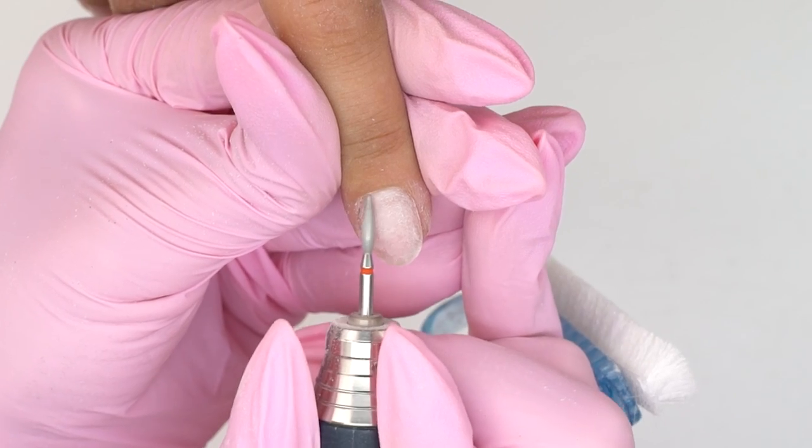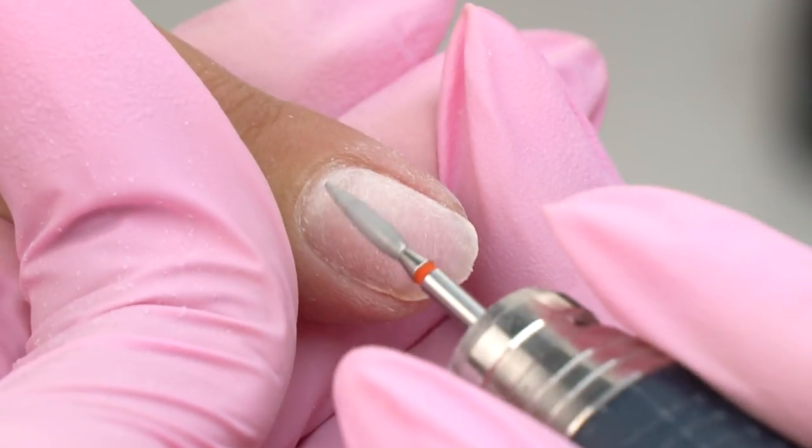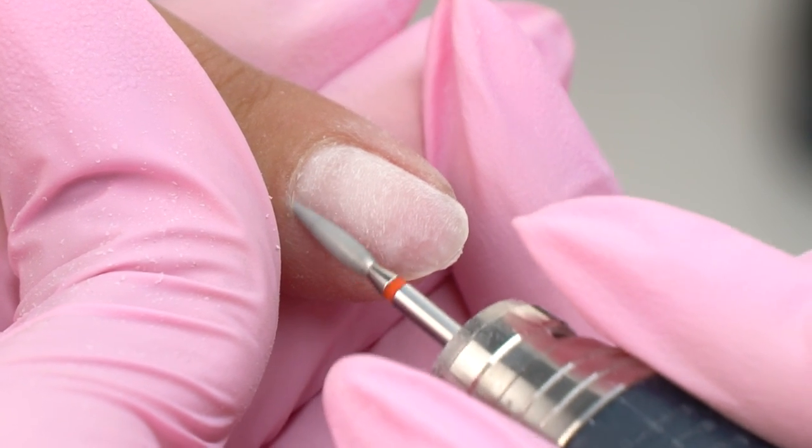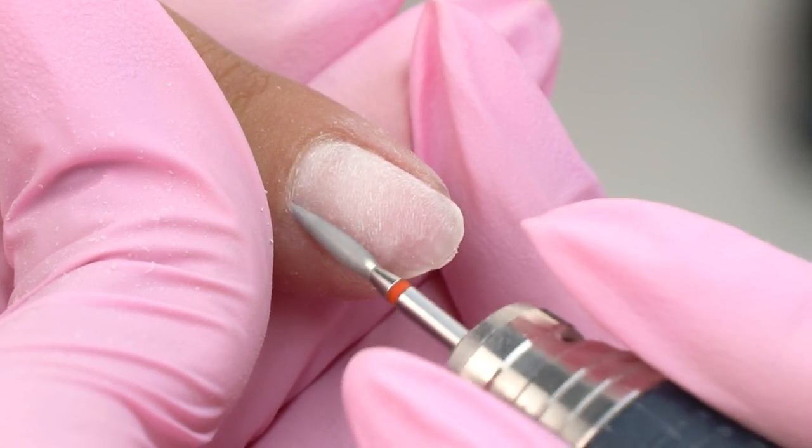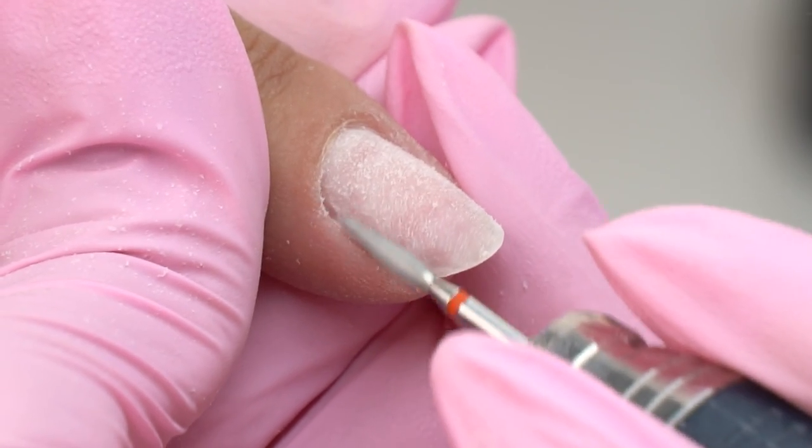To avoid liftings in the cuticle zone, I clean up the pterygium with a diamond flame drill bit. I process the left sides in the forward position, the speed is 15 to 17 thousand rpm.